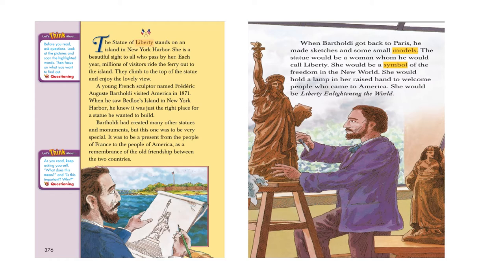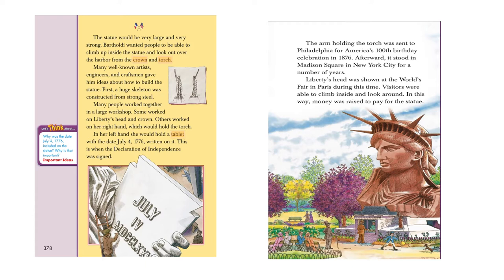She would hold a lamp in her raised hand to welcome people who came to America. She would be Liberty enlightening the world. The statue would be very large and very strong. Bartholdi wanted people to be able to climb up inside the statue and look out over the harbor from the crown and the torch. A crown is what a queen or king puts over the head. A torch is a source of light — a stick made from metal or wood with a source of light at the end, like fire or a light bulb.